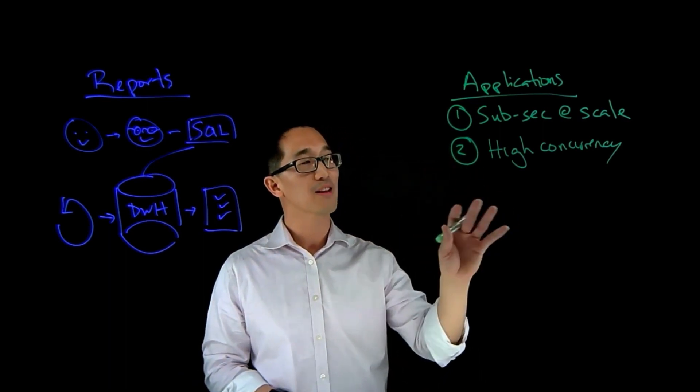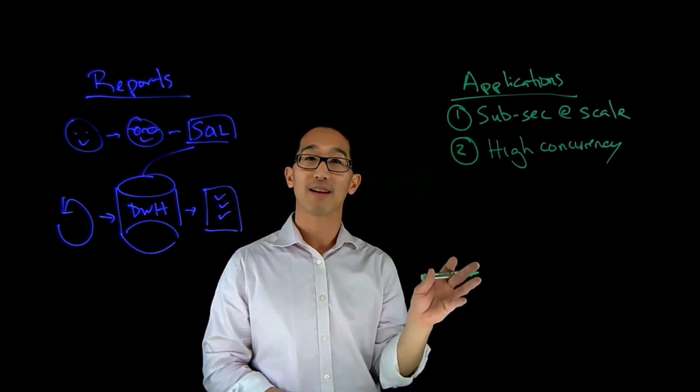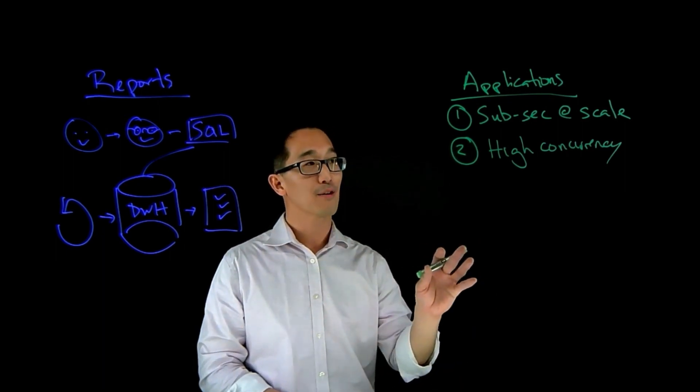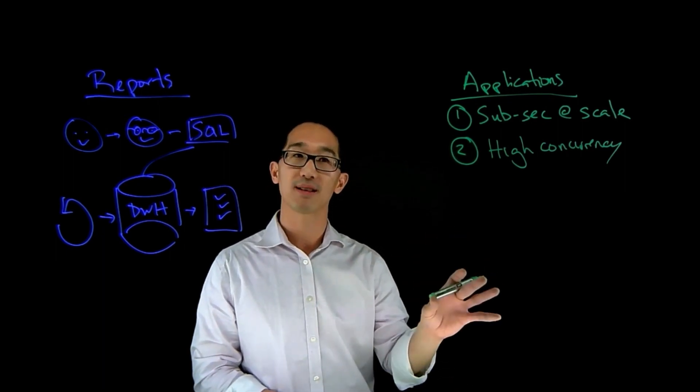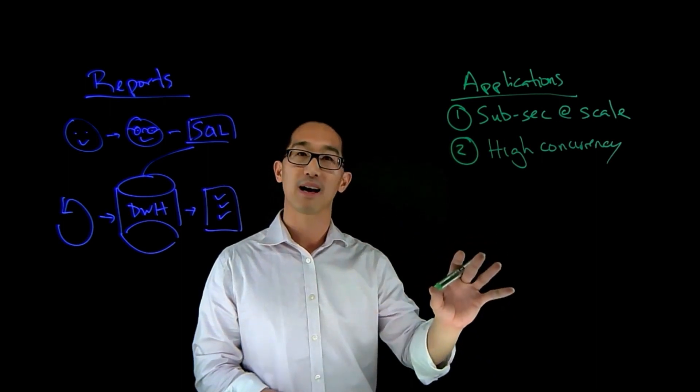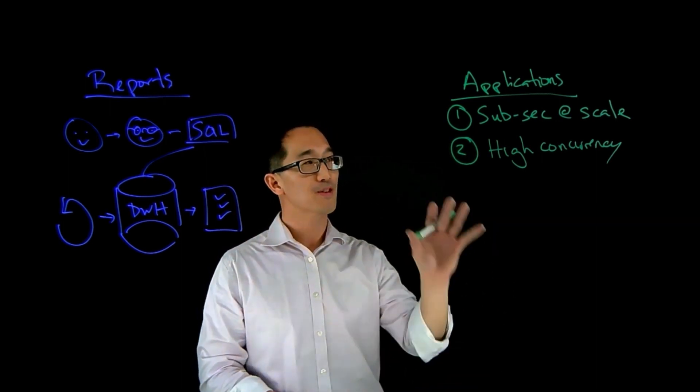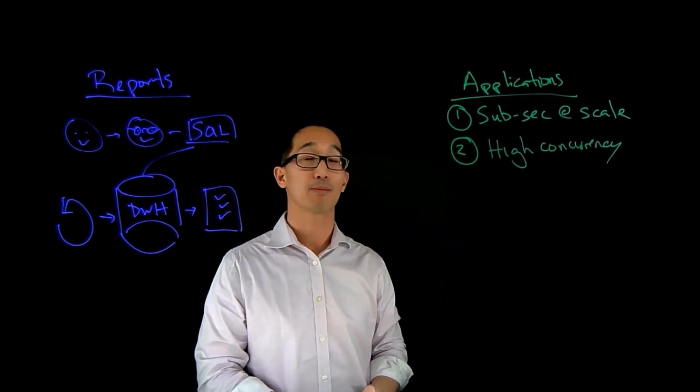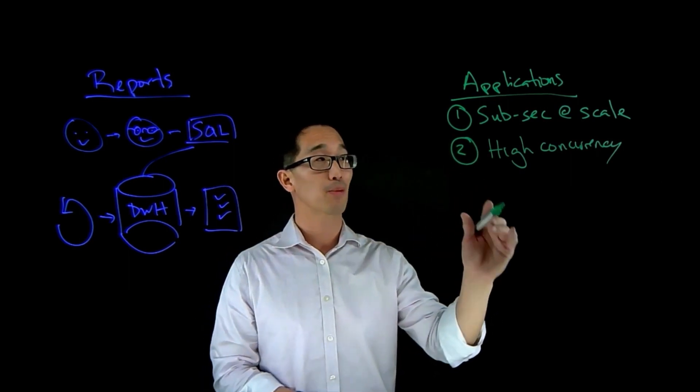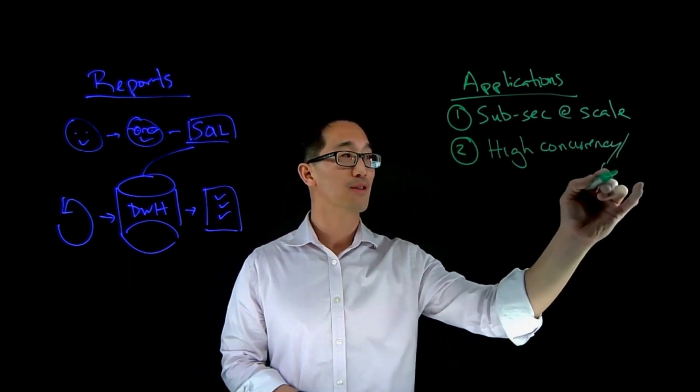And so when you're dealing with highly concurrent environments, you really have to have an architecture that's designed for that CPU efficiency to get the most performance out of the smallest hardware footprint. And so that's another reason why folks like to use Apache Druid is its ability to support high concurrency or otherwise known as QPS.